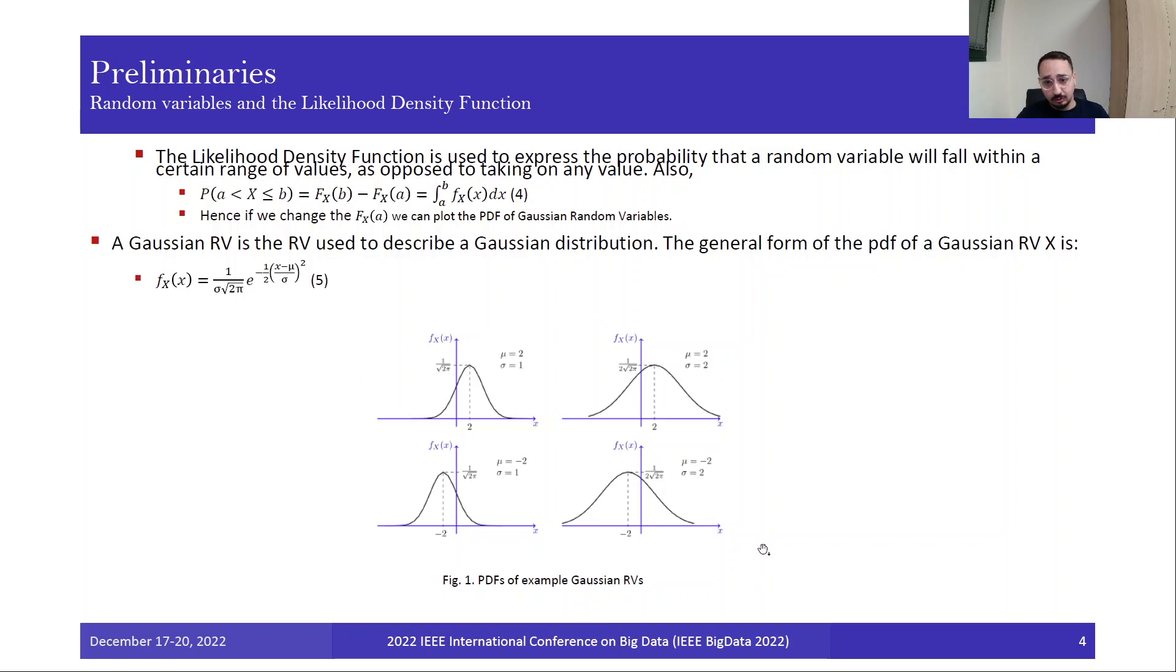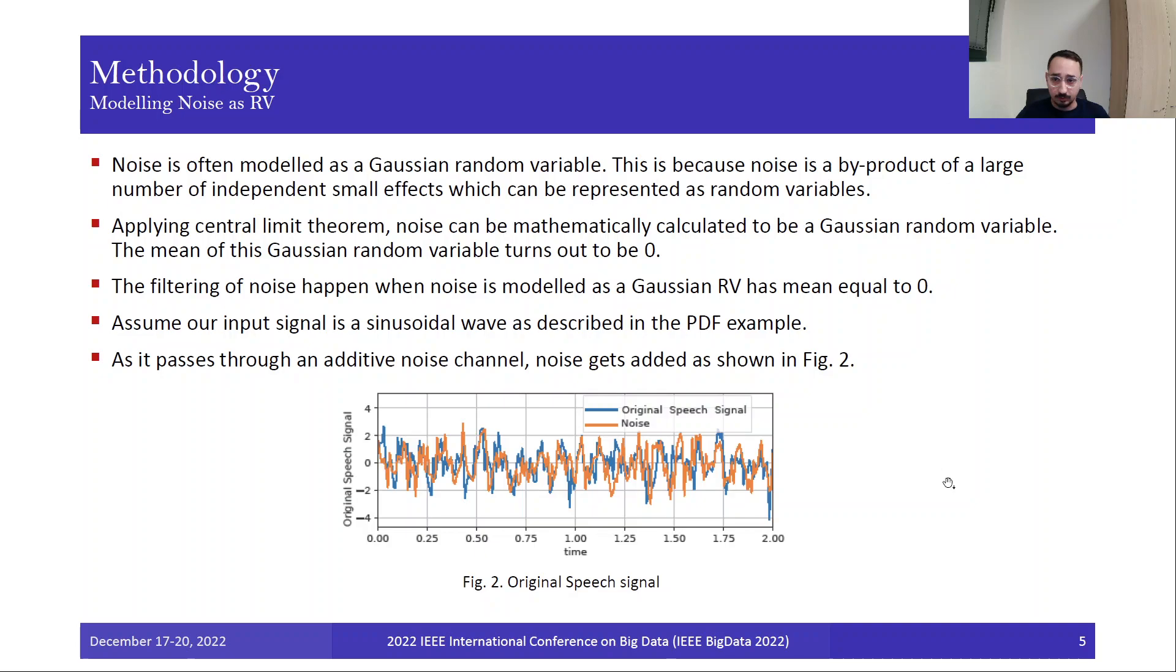Next, we have the likelihood density function, which is used to express the probability that the random variable will fall within a certain range of values, as opposed to taking on any value, where we have this equation 4. Hence, by changing f_X(a), we can plot the probability density function of a Gaussian random variable, as we have done here.